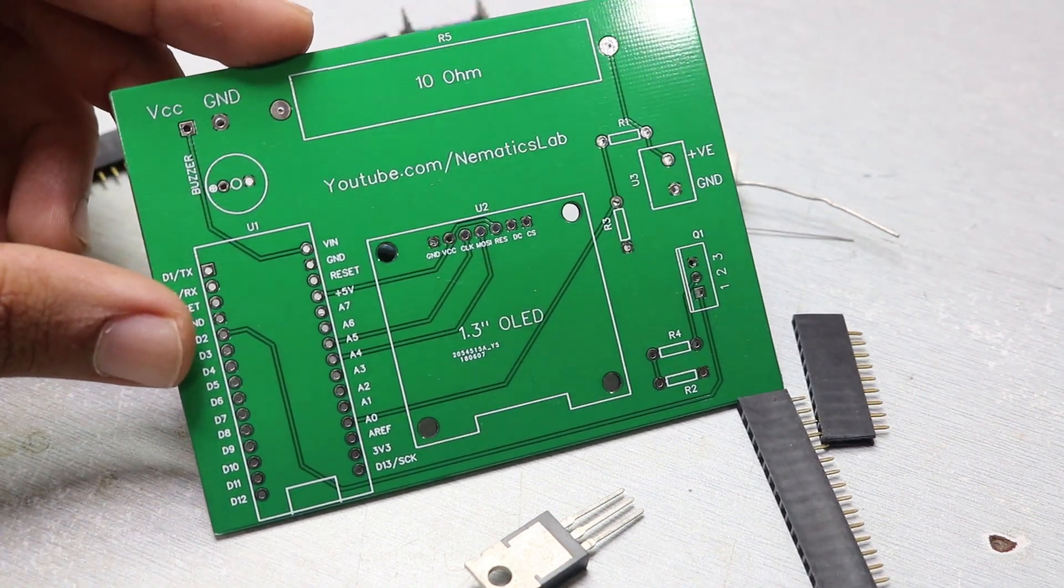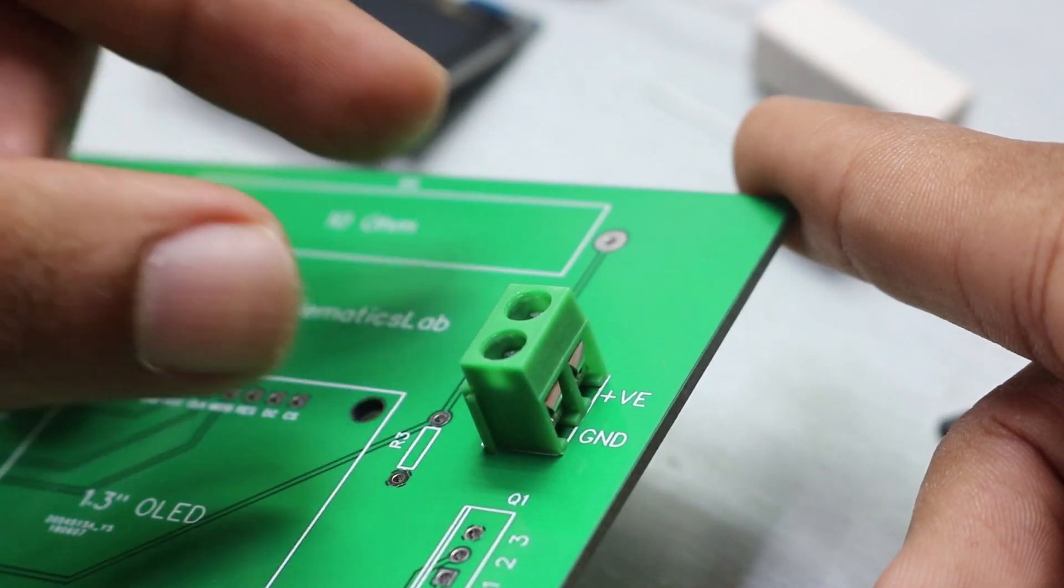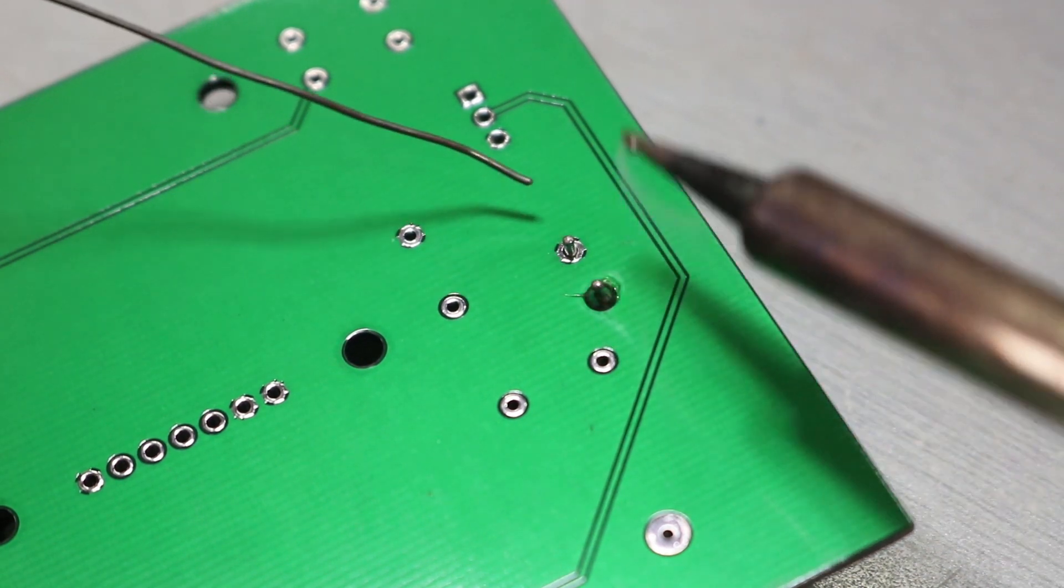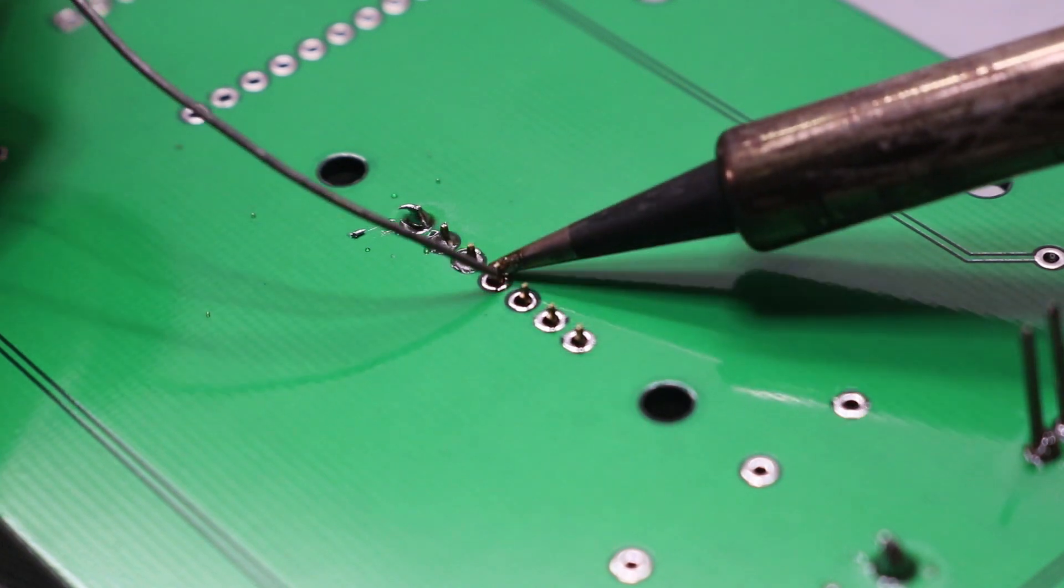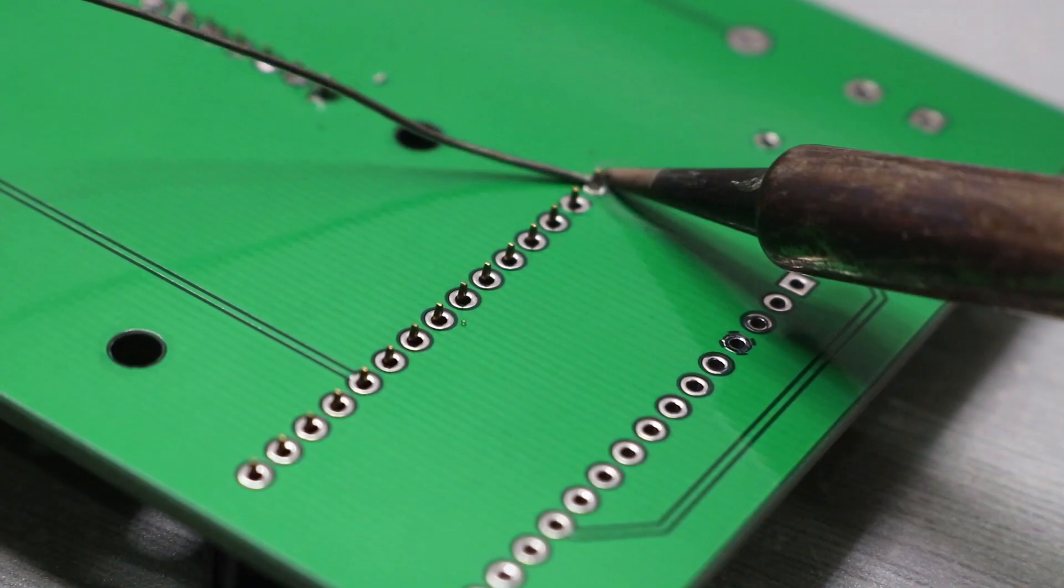Then I started the soldering process on the PCBs which I ordered online from JLCPCB.com. And if you want to make this project you can find the part list, schematic, program and the gerber files on Instructables. Link is in the video description.